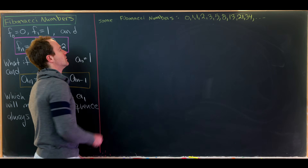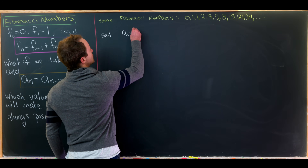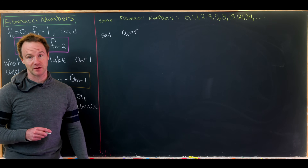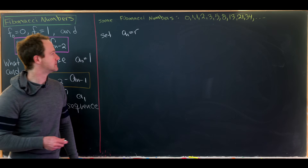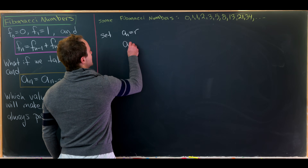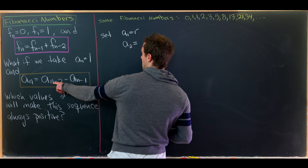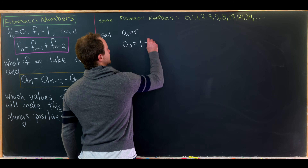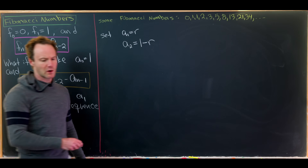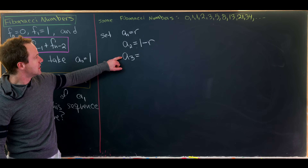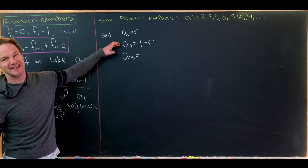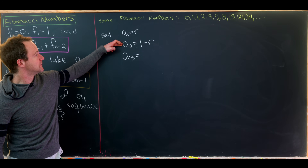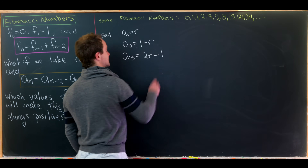Let's set a_1 = r for an arbitrary value. Then a_2 = a_0 - a_1 = 1 - r. For a_3 = a_1 - a_2, we get r - (1 - r) = 2r - 1.